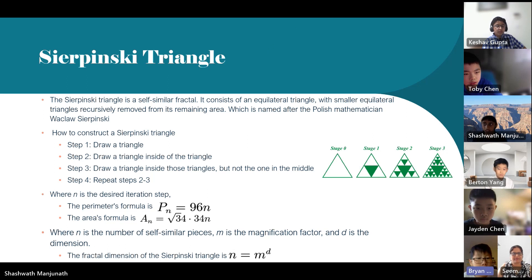The Sierpinski Triangle. The Sierpinski Triangle is a self-similar fractal as you can see in the pictures below. It consists of an equilateral triangle with smaller equilateral triangles recursively removed from its remaining area, which is named after the Polish mathematician Waclaw Sierpinski.